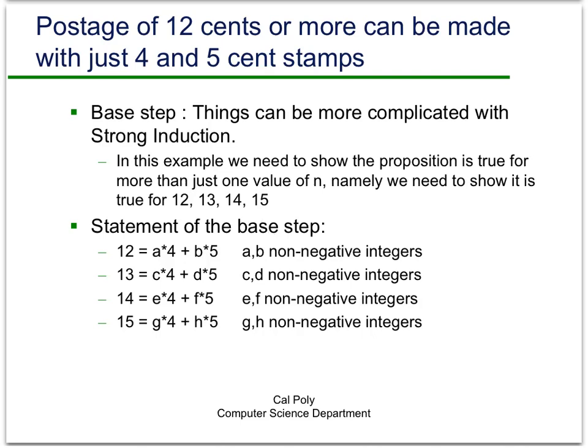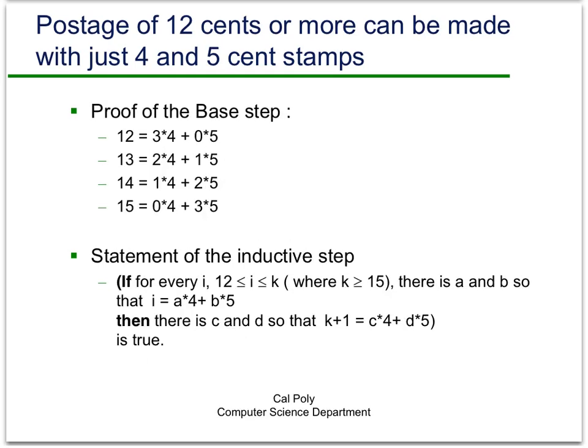Here's the statement of the base step: 12 equals some number times 4 plus some number times 5, where a and b are non-negative integers. Similarly for 13, 14, and 15. How do we prove the base step? We just figure out how to express each value as a linear combination of 4 and 5. Well, 12 = 3×4 + 0×5; 13 = 2×4 + 1×5; 14 = 1×4 + 2×5; 15 = 0×4 + 3×5.